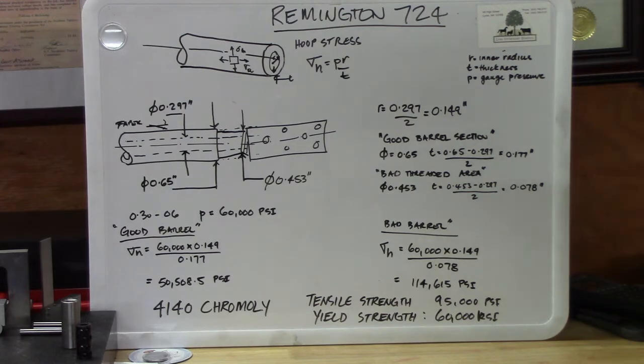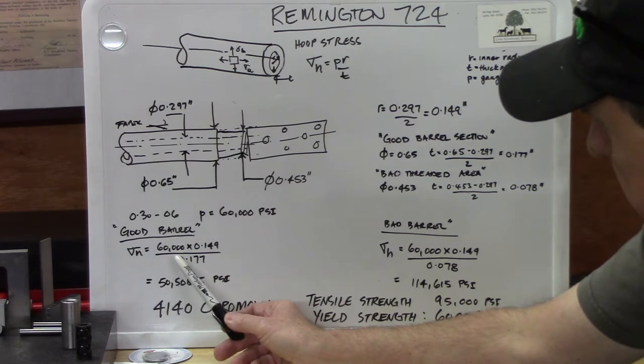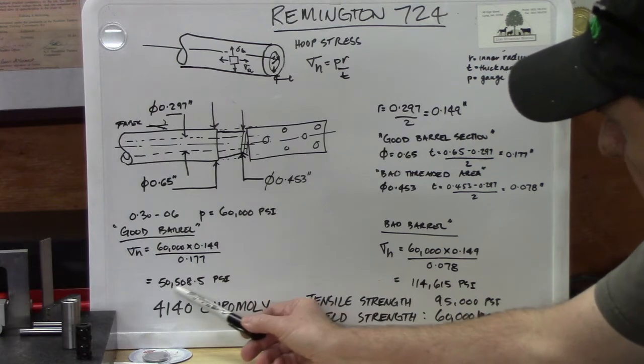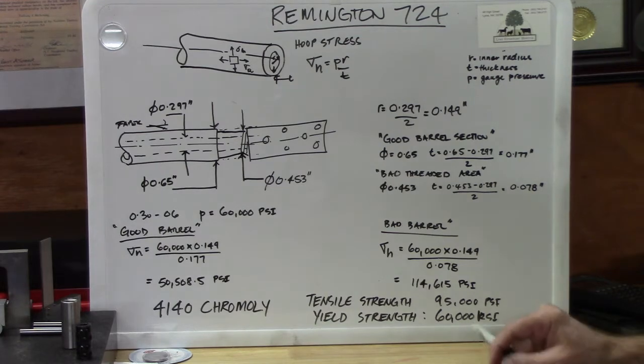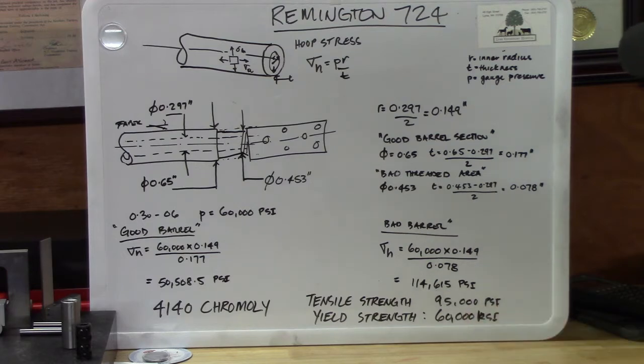So now we have everything we need to calculate what is the hoop stress in this barrel when it's fired and it's full of gases at 60,000 psi. And using our formula of PR on T, pressure times radius divided by wall thickness, gave us 50,508.5 psi. In the bad barrel section, we had 114,615 psi. That is the stress the steel is under.